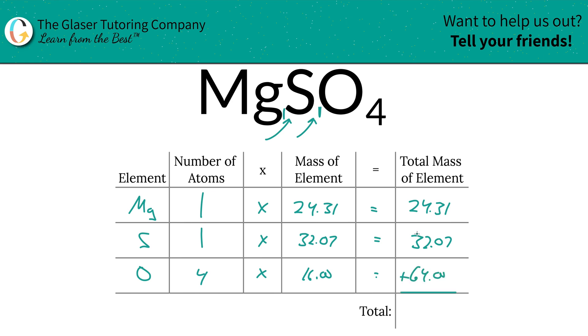So then to find the total mass of the entire compound, all you got to do is just add the column together. So that's going to be a total of 120.38. And the units there are AMU because we're solving for molecular mass.